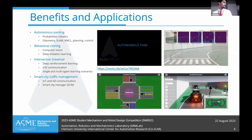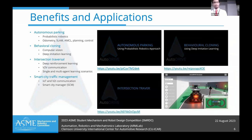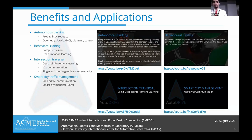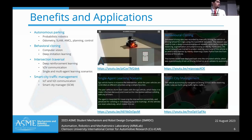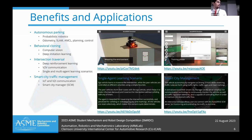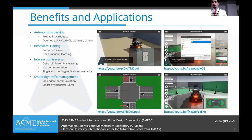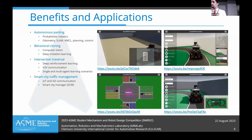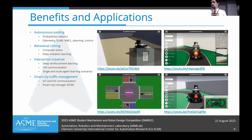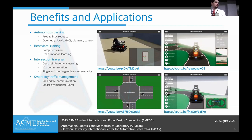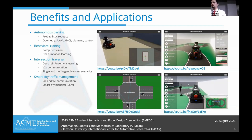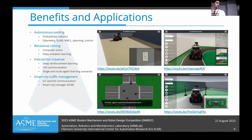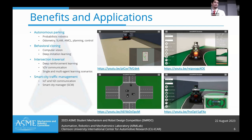Coming to the benefits and applications, this project has huge scope. We are demonstrating four sample applications: autonomous parking using a probabilistic robotics approach to navigate tight spaces; visual perception for behavioral cloning; multi-agent intersection traversal in single or multi-agent learning scenarios; and smart city management using over-the-air control commands from a smart city manager server.